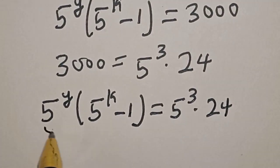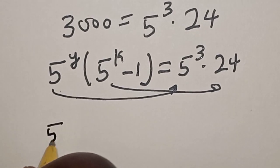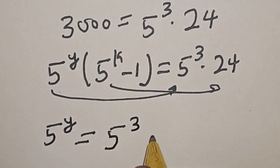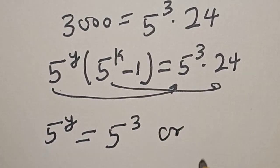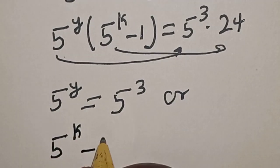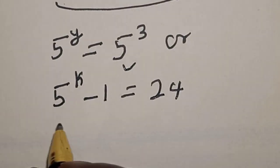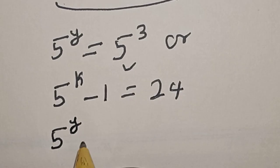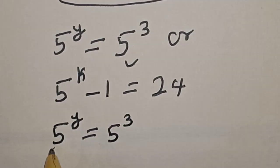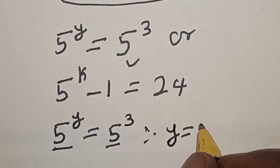Now, comparing the two sides, we match 5 raised to power y with 5 raised to power 3, and 5 raised to power k minus 1 with 24. From the first comparison, 5 raised to power y equals 5 raised to power 3. They have the same base, therefore y is equal to 3.